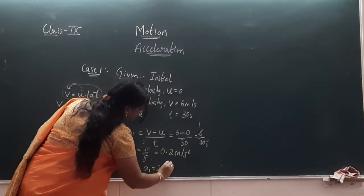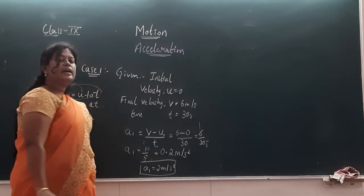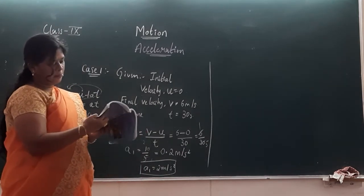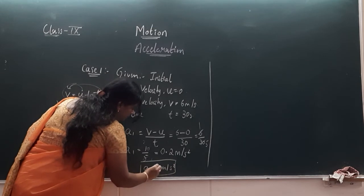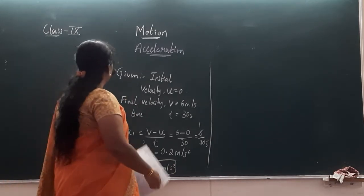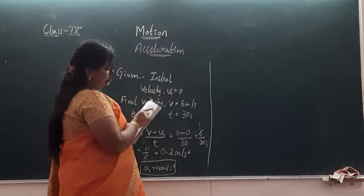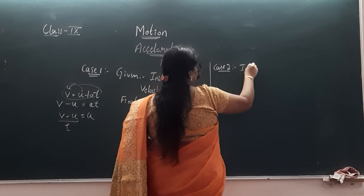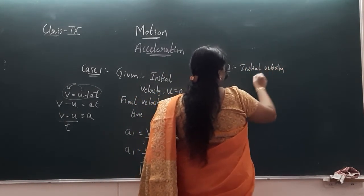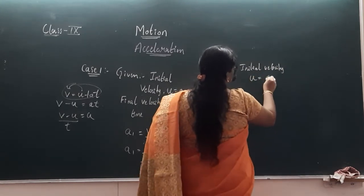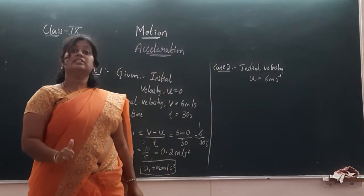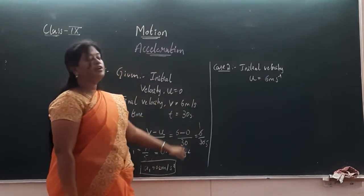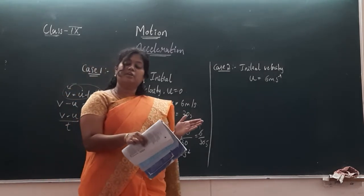So a1 is 0.2 meter per second square, which is the acceleration of the bicycle in case 1. Similarly, let us find out the acceleration for case 2. For case 2, brakes are applied. Initial velocity u is 6 meter per second — because he was riding the bicycle at 6 meter per second when he applied the brake.